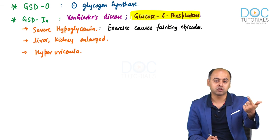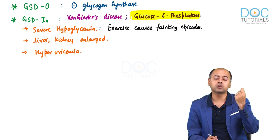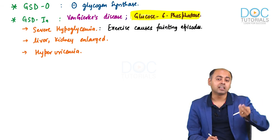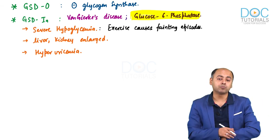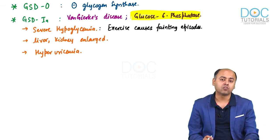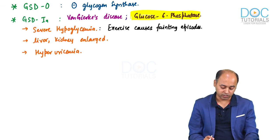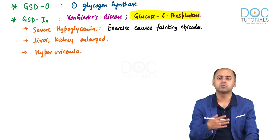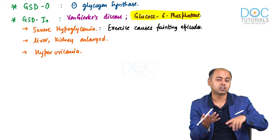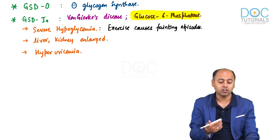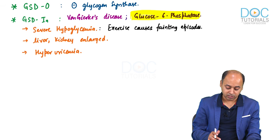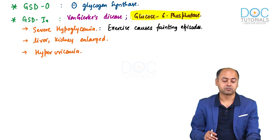Since purines cannot be stored, when a lot of purine is present, we find hyperuricemia. Another very important finding in these patients will be hyperuricemia. So the characteristic findings for Von Gierke's disease are: severe hypoglycemia with fainting episodes, enlargement of the liver and kidney, and hyperuricemia — which can present as gout, renal stones, or tophi depending on whether treatment has been taken.